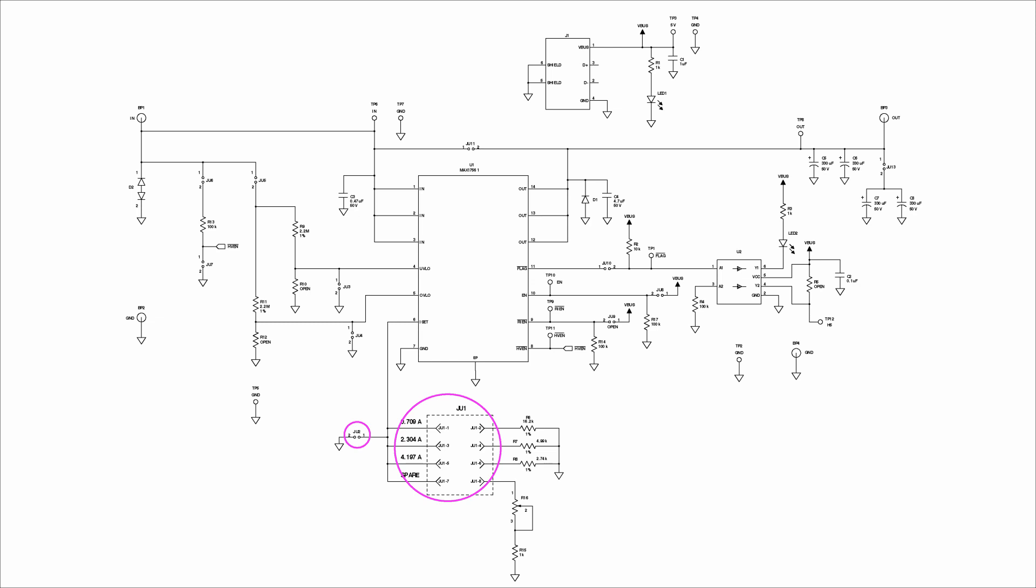Jumpers 1 and 2 set the current threshold to 0.7 amps. Jumpers 3 and 4 in their default positions connect the UV-LO and OV-LO pins to ground and enable the internal UV-LO and OV-LO respectively.